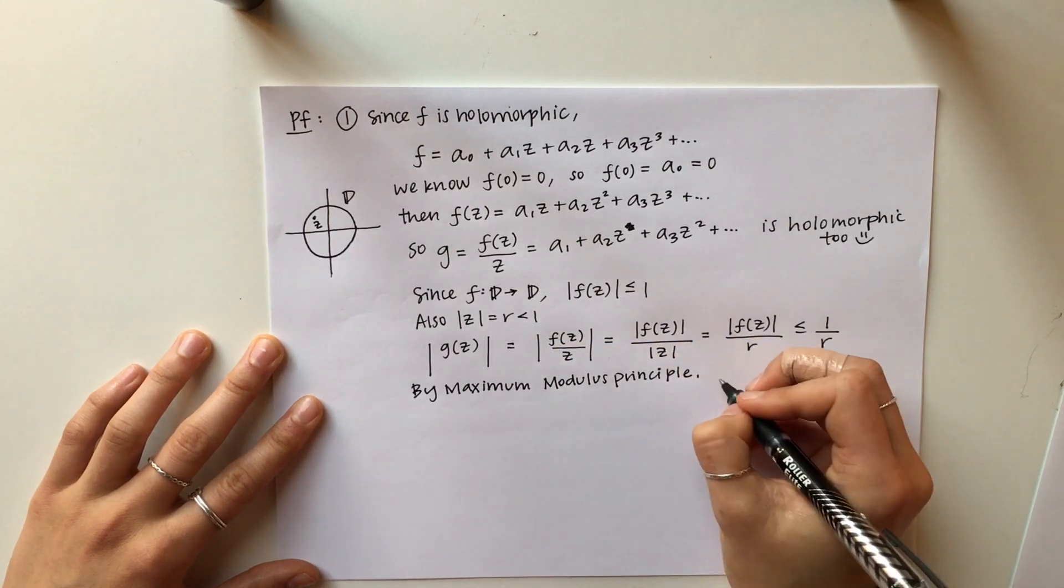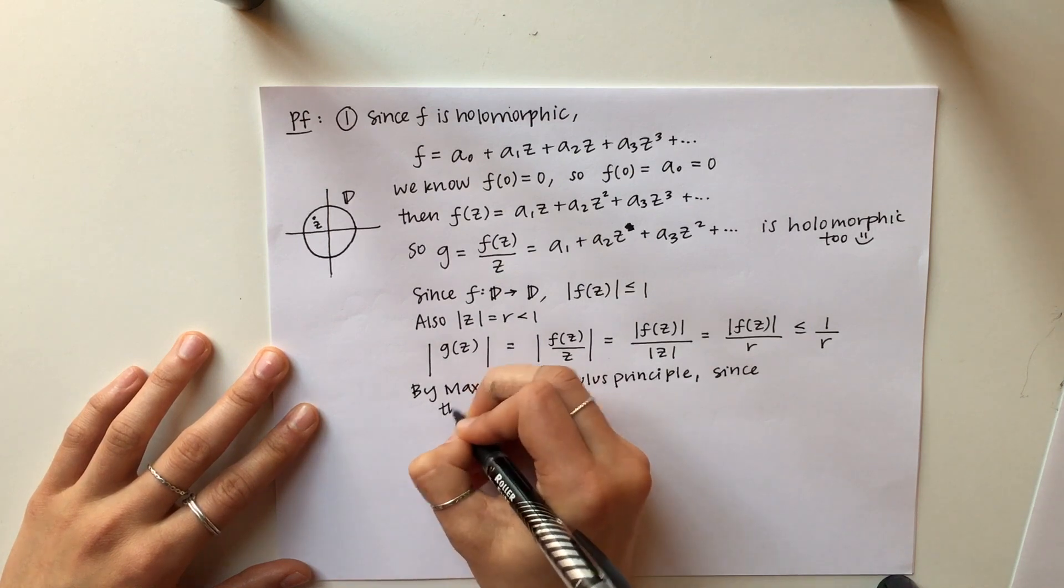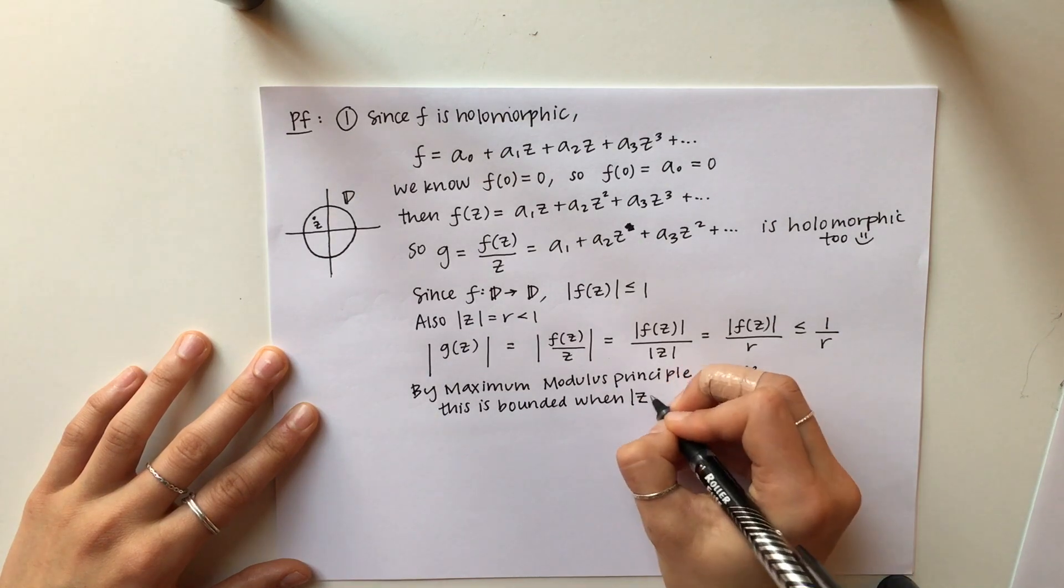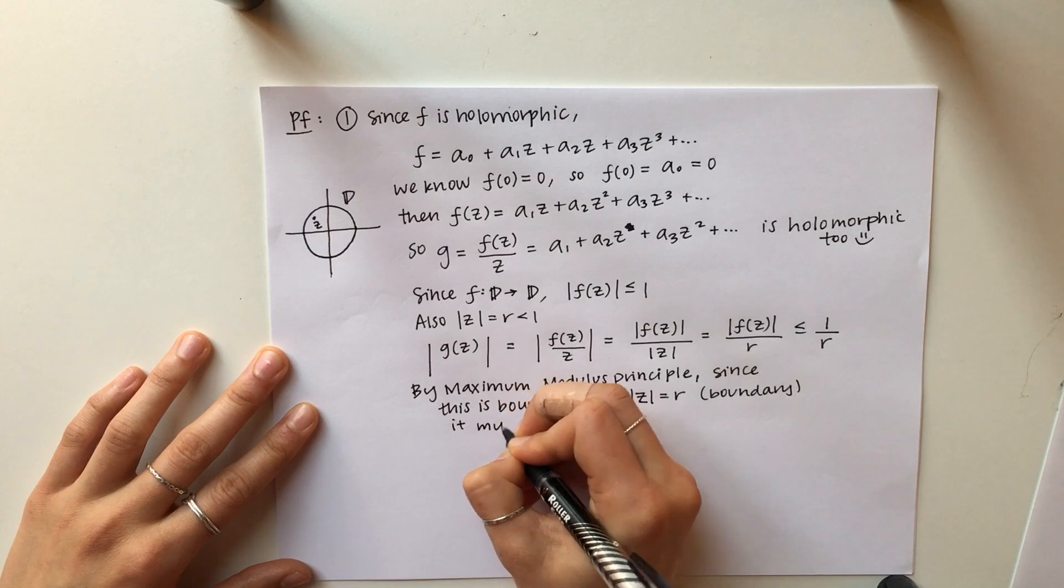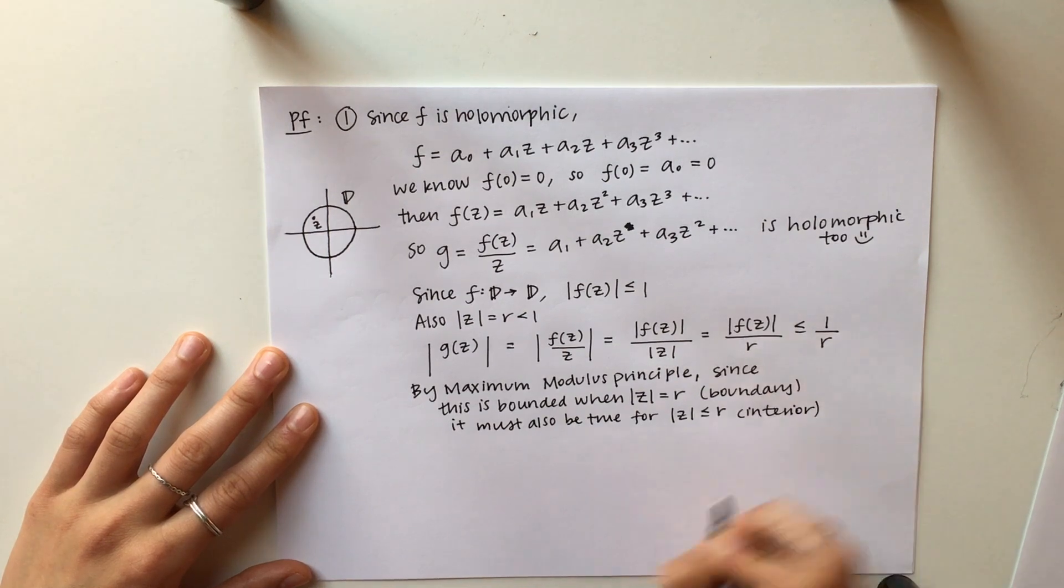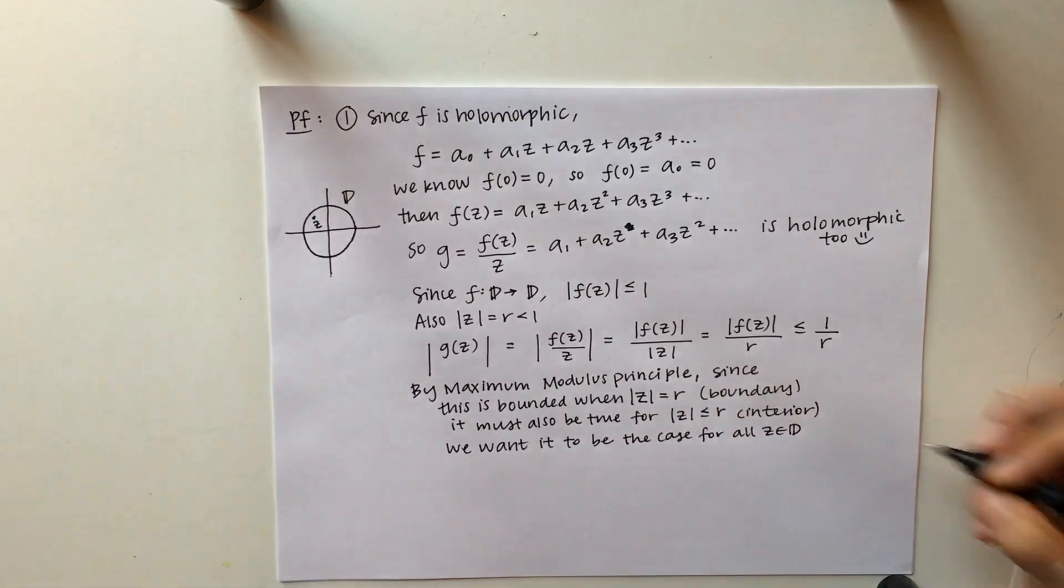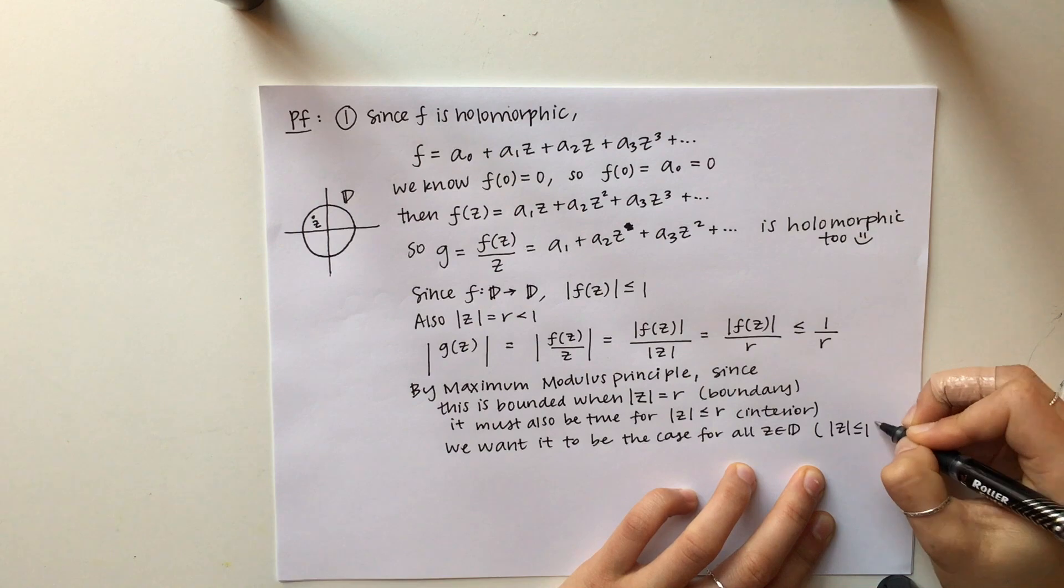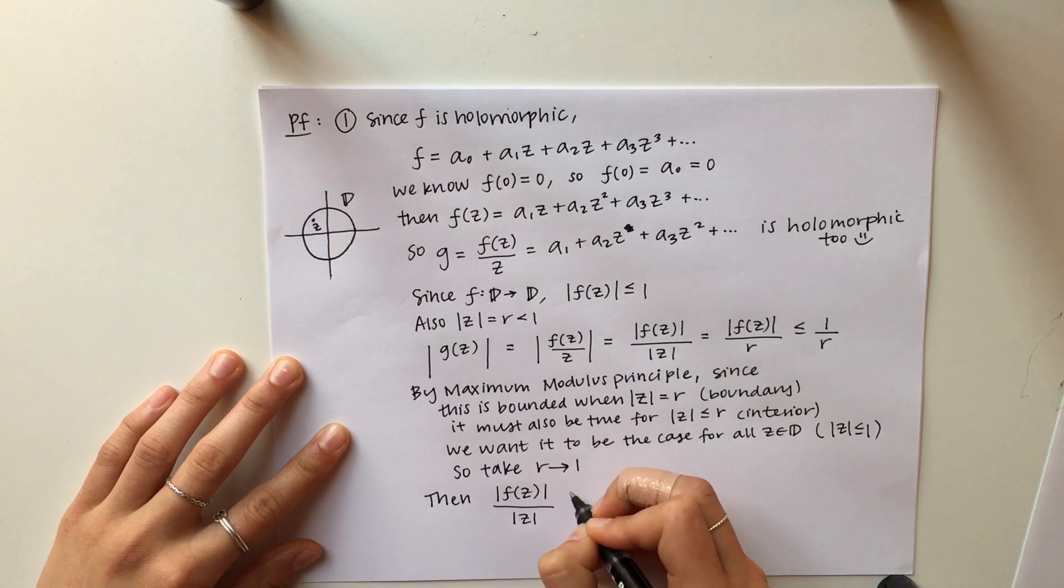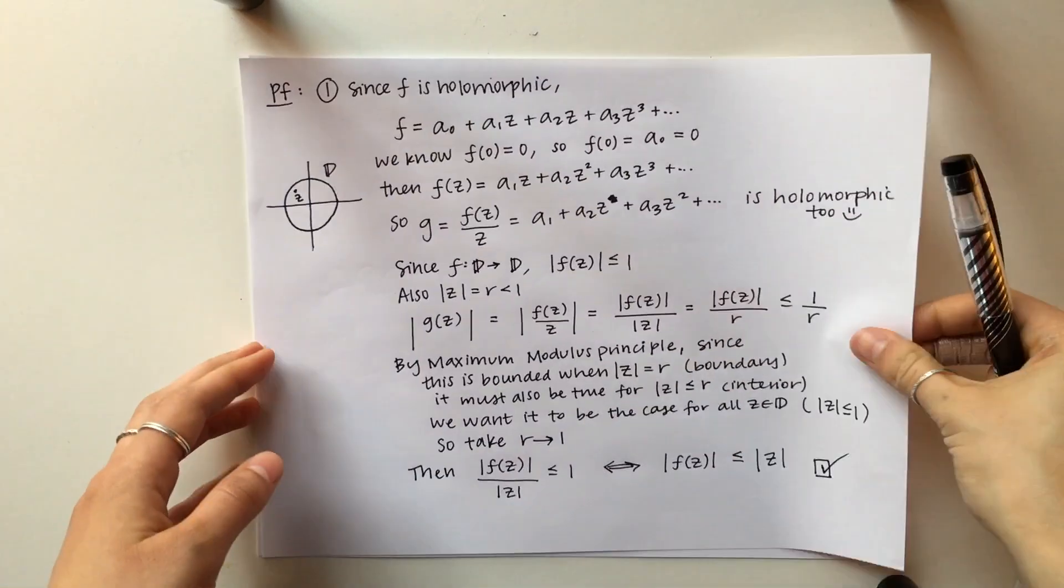Here's where the maximum modulus principle comes into play. We know that G of Z is bounded by 1 over R when Z is on the boundary of a disk with radius R. By the maximum modulus principle, if we attain a maximum on a boundary, then it also must be true that that same maximum is in the interior. So we can also say that that statement must be true for Z less than R. But we want it to be the case for all Z inside the unit disk, so we want Z to be less than 1. So we let R go to 1, and then we have that the modulus of F divided by the modulus of Z is less than or equal to 1, which multiplying both sides by the modulus of Z, we get our result that we were hoping for.